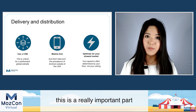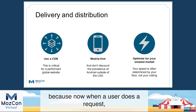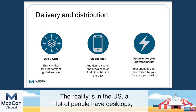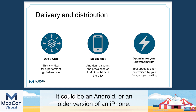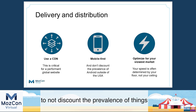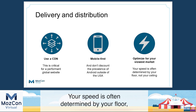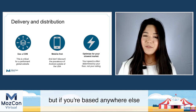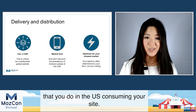Delivering distribution is a really important part of having an international site. I highly suggest getting a CDN — this is really critical for global performance, because when a user does a request they're getting the site from a server that's closest to them. Also think about mobile first — in the US a lot of people have desktops and laptops, but in many other countries people just have a mobile device, often Android or an older phone. Optimize for your slowest market. Your speed is often determined by your floor, not your ceiling. Comparing the Stripe homepage to the Stripe homepage for the UAE shows vastly different experiences for core web vitals like first contentful paint, largest contentful paint, and first input delay — even though these are technically supposed to be the same site.